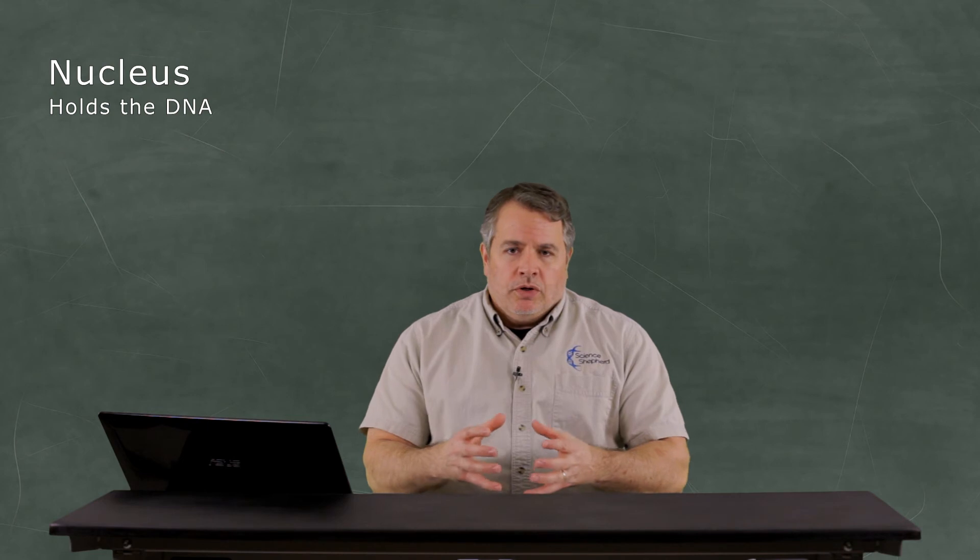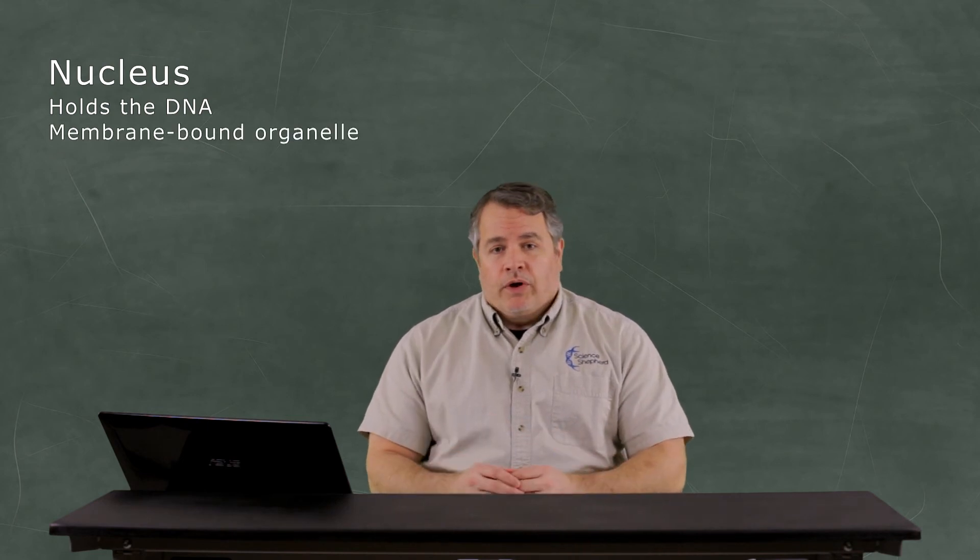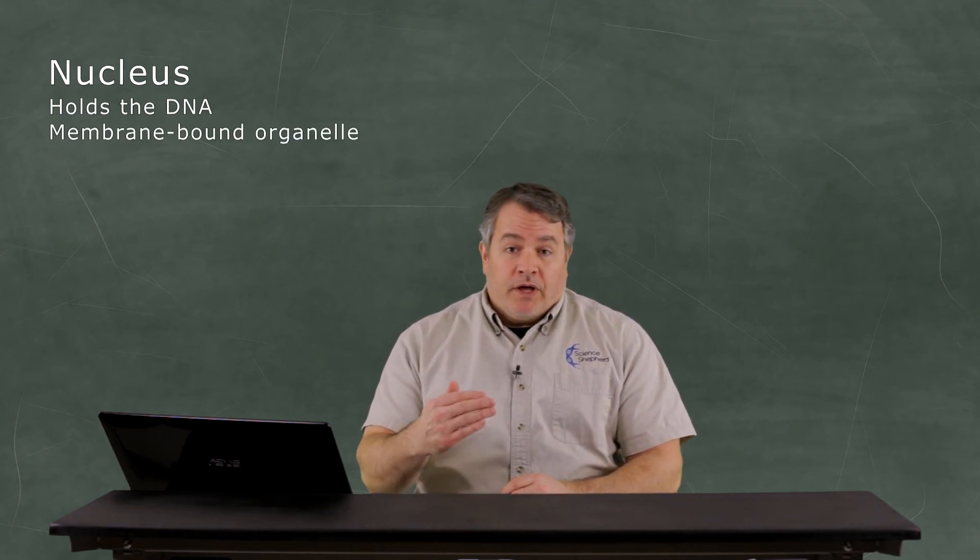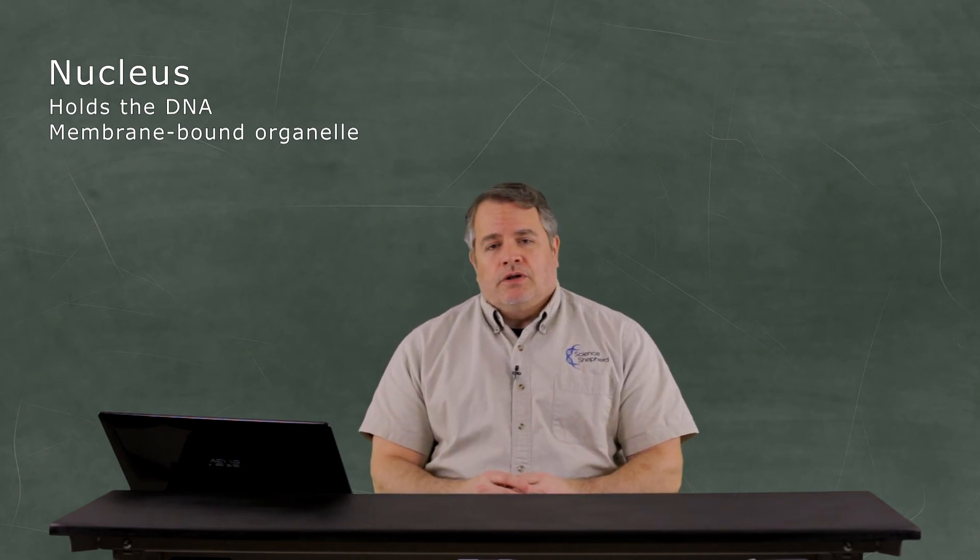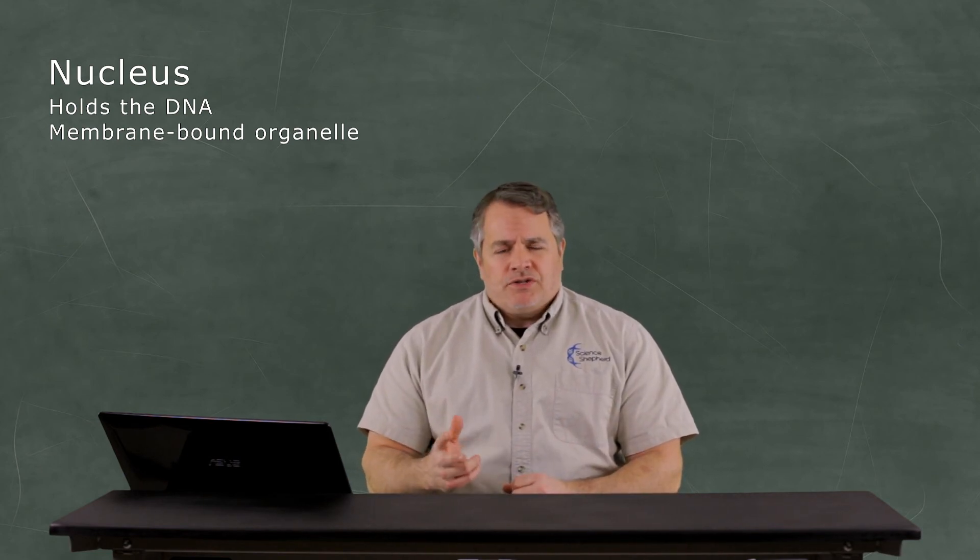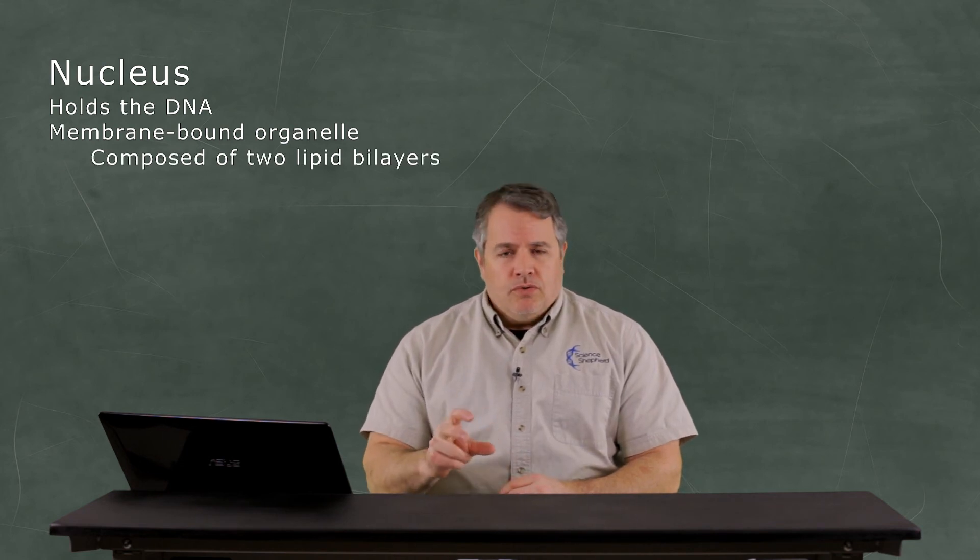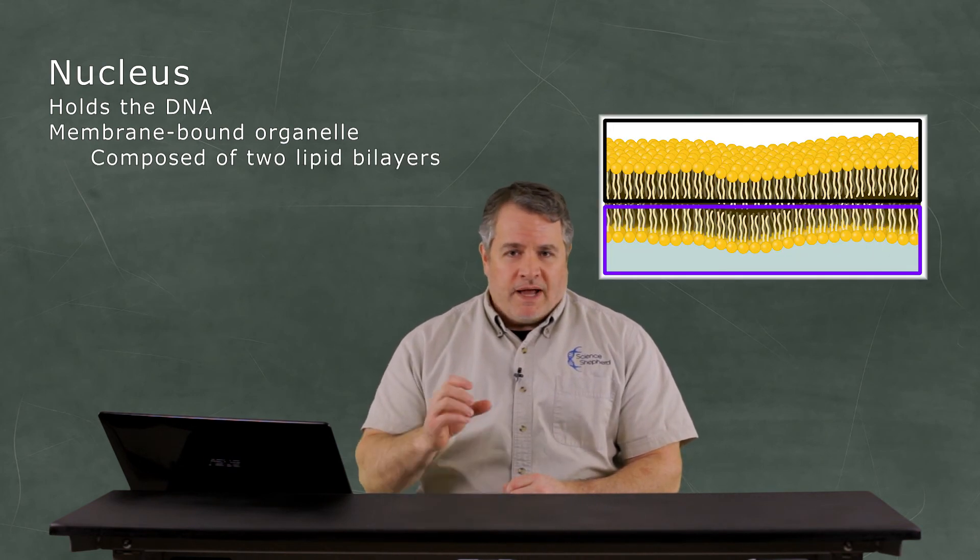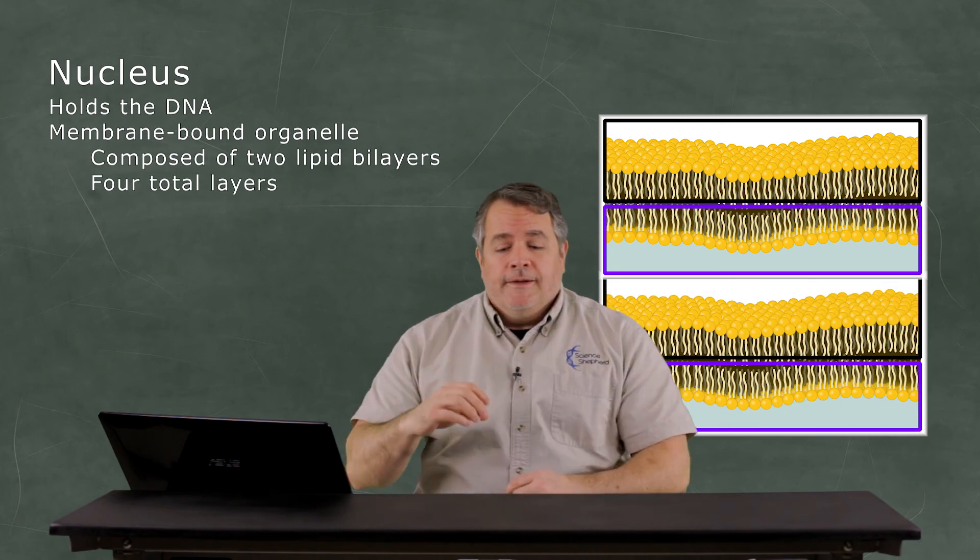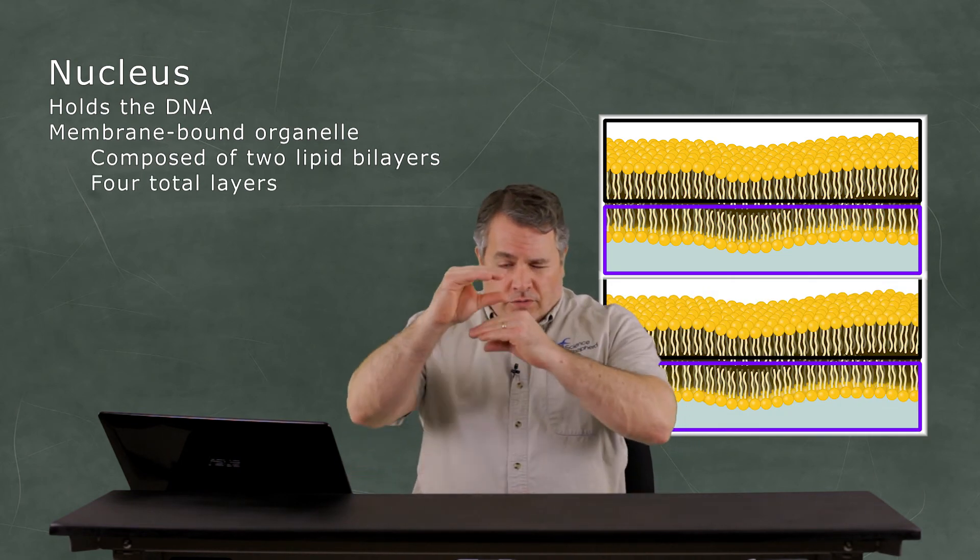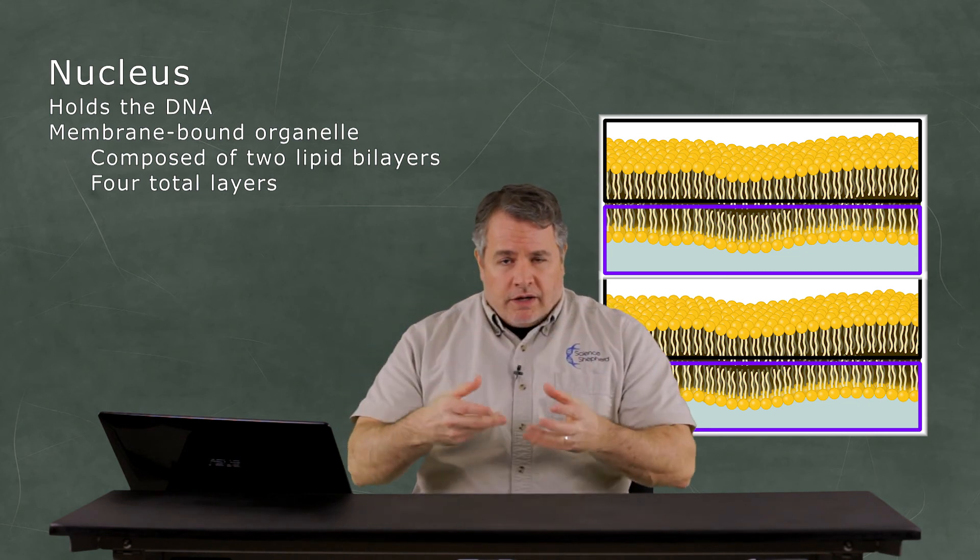So the nucleus really is the special covering. It's a membrane-bound organelle, which means that it's composed of a membrane, just like we talked about for the cell membrane. But it actually is kind of interesting because it's composed of two of those lipid bilayers. So if you can imagine, it is like four pieces of paper rather than two. So it's two lipid bilayers on top of each other, creating a sphere.